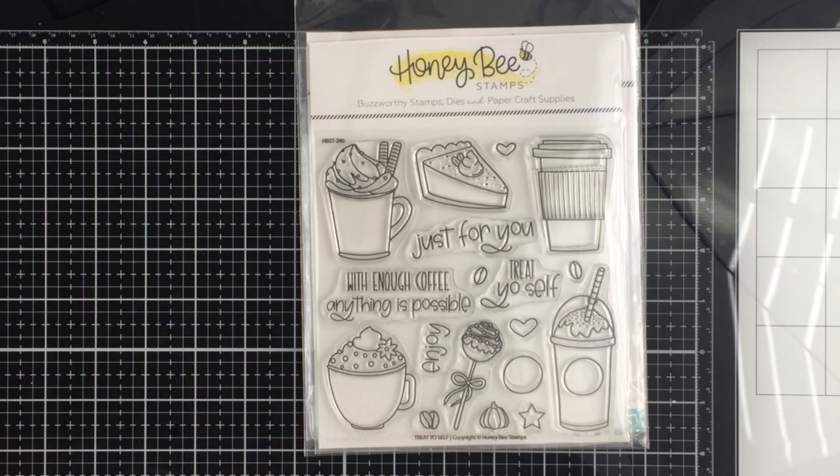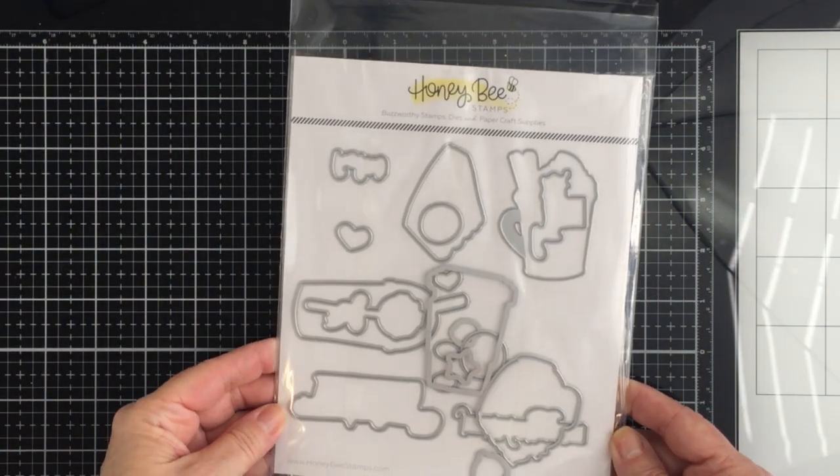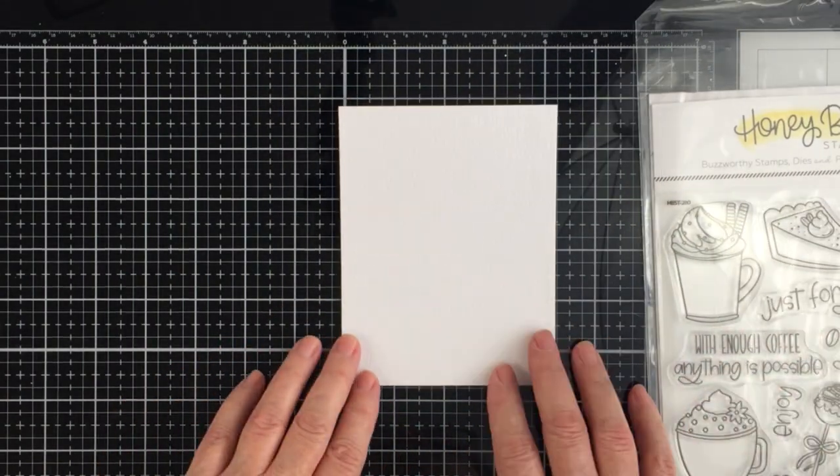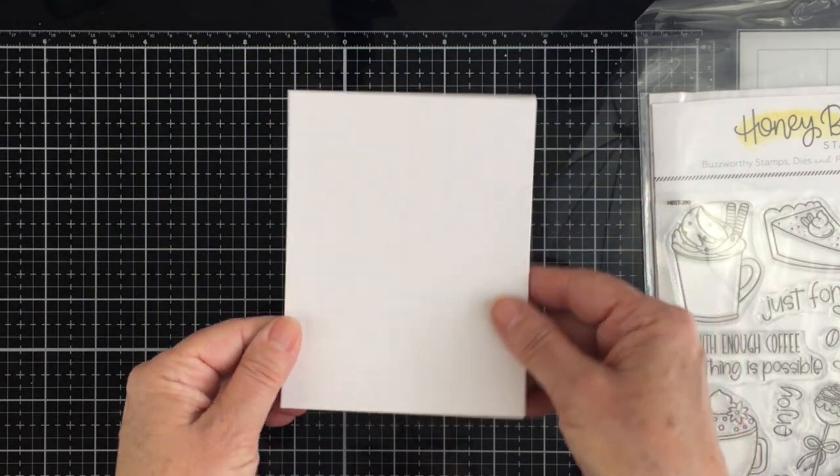I'm going to be using the adorable treat yourself stamp and coordinating die set. I love this set. Definitely reminds me of Parks and Rec, one of my favorite shows, and it's just so adorable. There's so many fun sentiments and images, and I really wanted to do a mixed media background today.